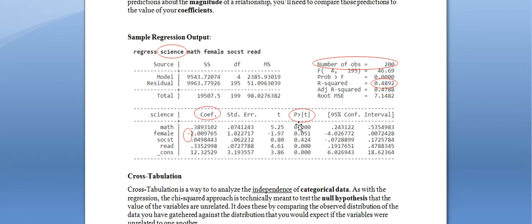But the p-value only tells you whether or not there is a statistically significant relationship. It doesn't tell you if there's a substantively significant relationship or what direction that relationship moves in. For that, we look at the coefficient, indicated under 'coef'. Each explanatory variable is also assigned a coefficient.